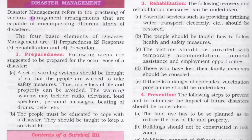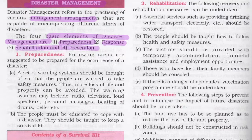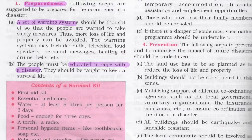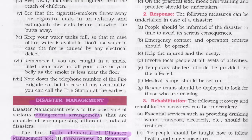Disaster management refers to the practice of various management arrangements capable of encompassing different kinds of disasters. The four basic elements are preparedness, response, rehabilitation, and prevention. For preparedness, a warning system should be planned so people are warned before disasters occur. People must be educated to cope with disasters and taught to keep a survival kit, which should contain first aid supplies, essential medicines, water, food, a torch, a radio, personal hygiene items, and baby and pet supplies. Mock drills and training should be undertaken.